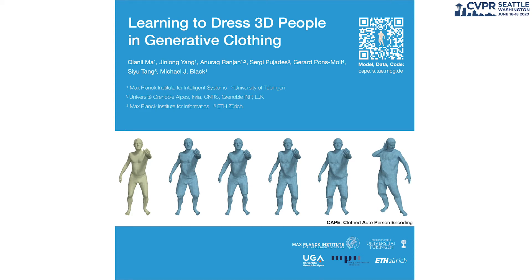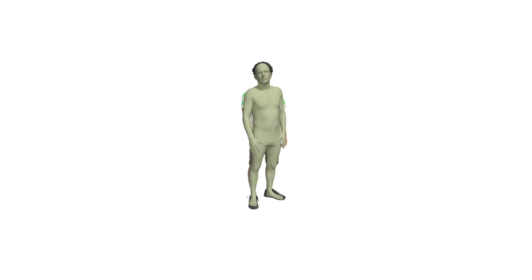We introduce CAPE, a parametric generative model of 3D humans in clothing. Existing 3D human body models have limitations for various applications due to the lack of clothing geometry.